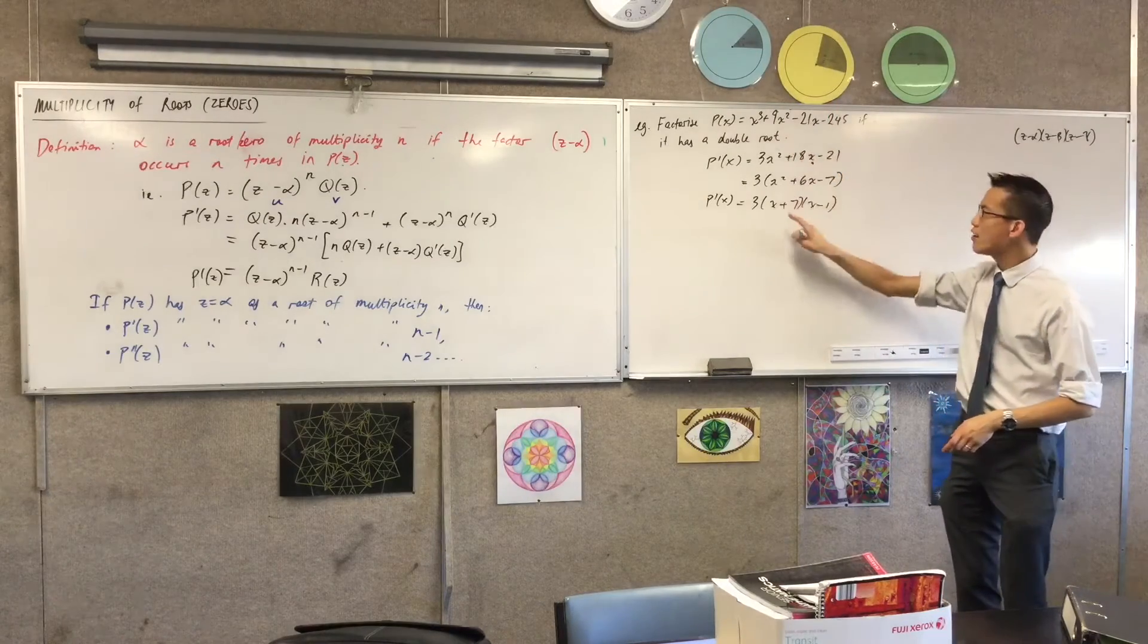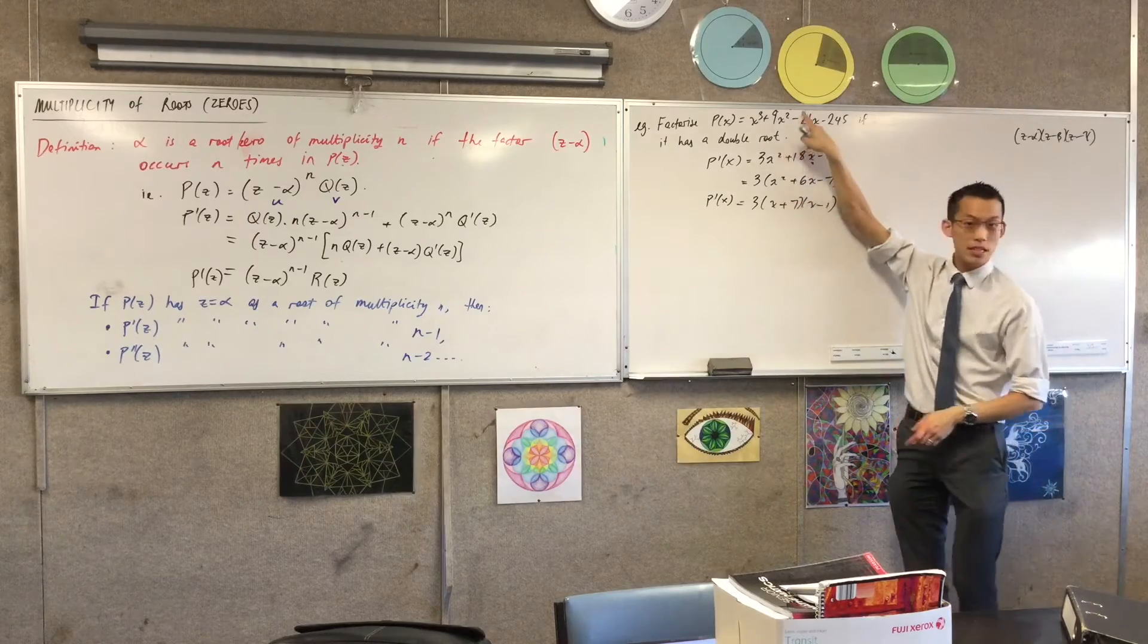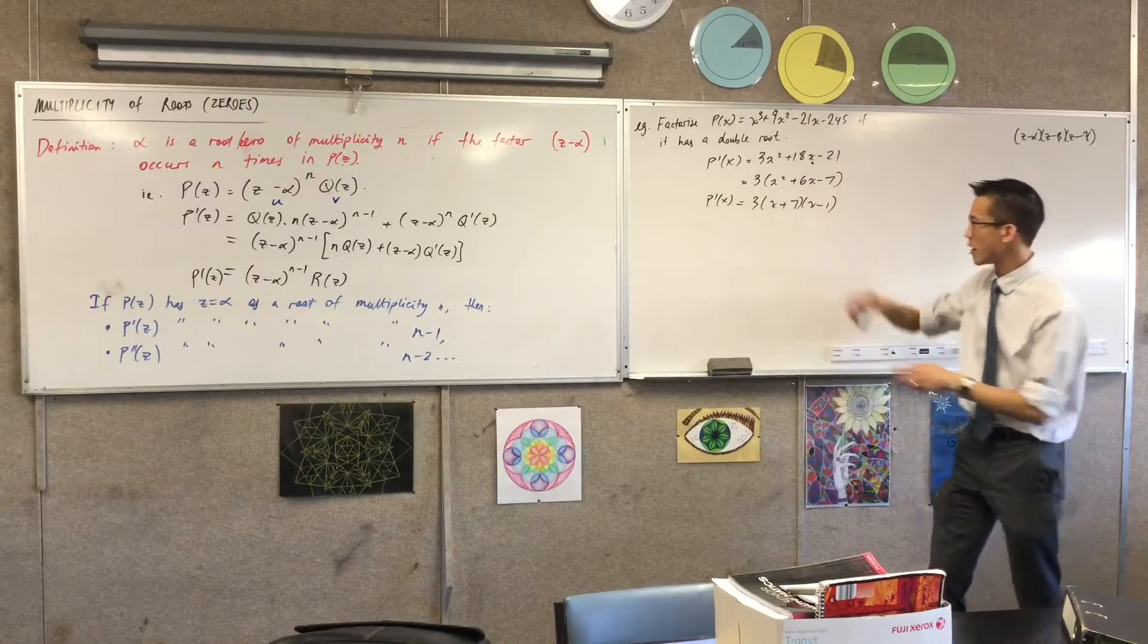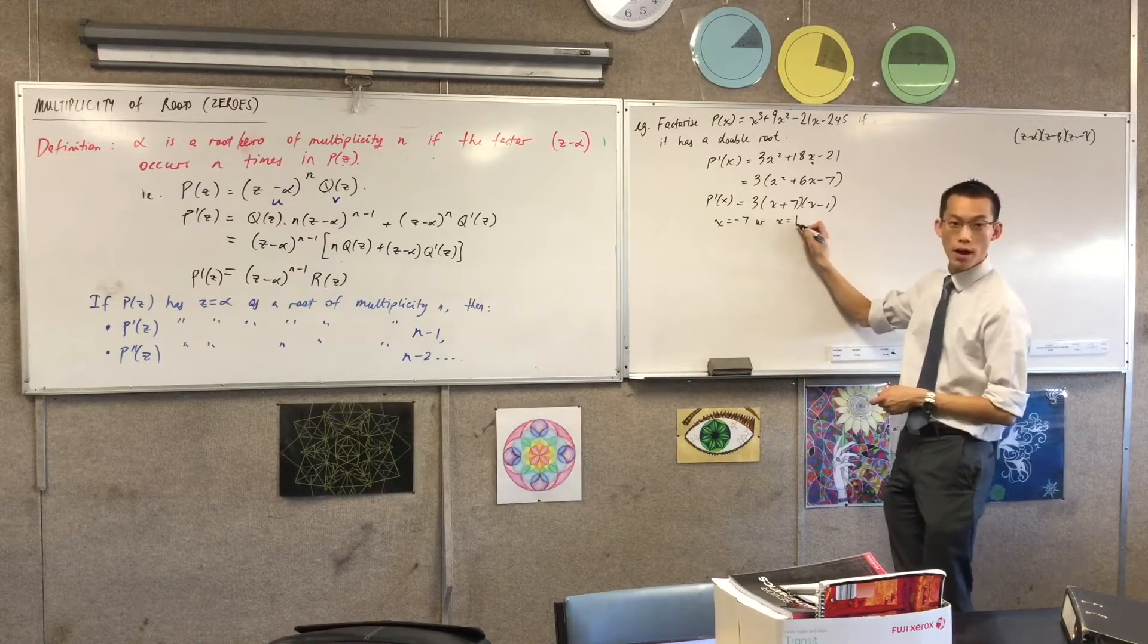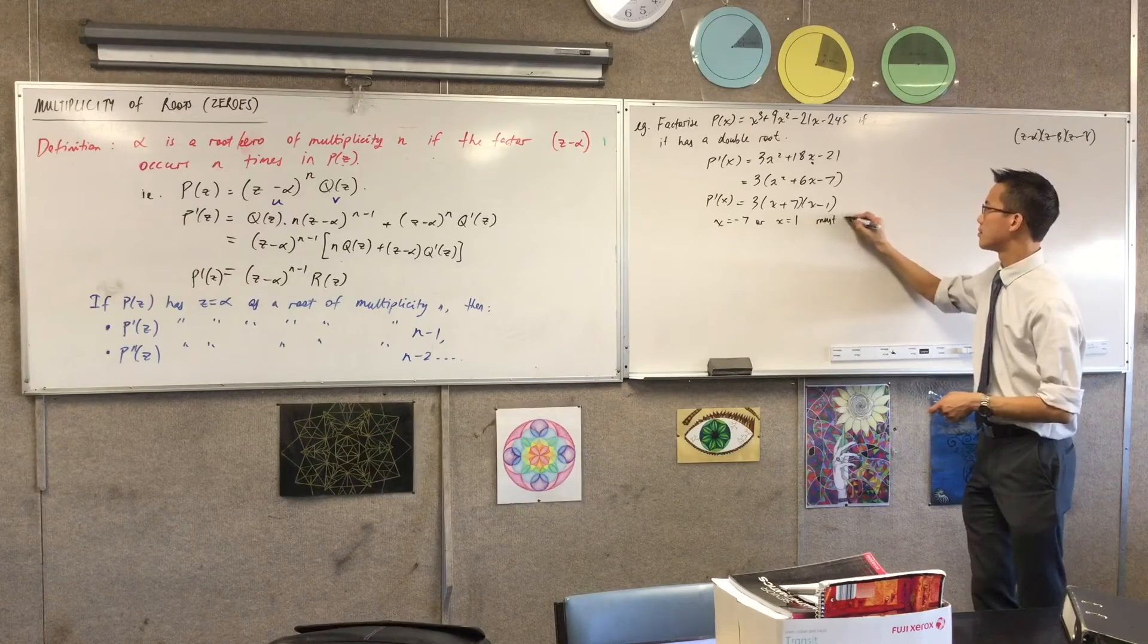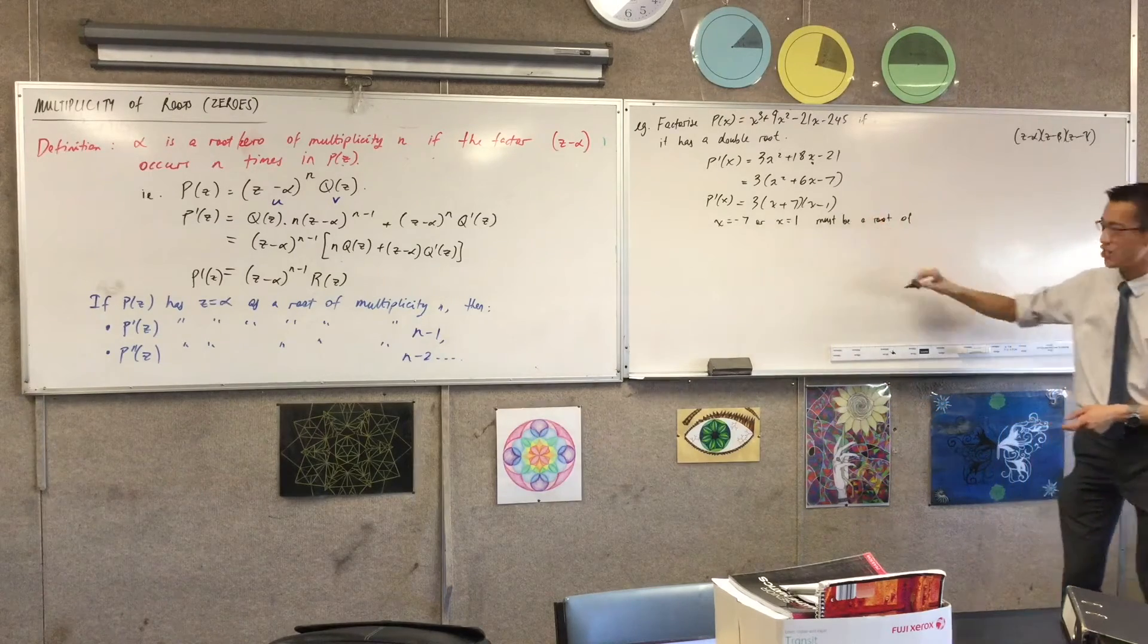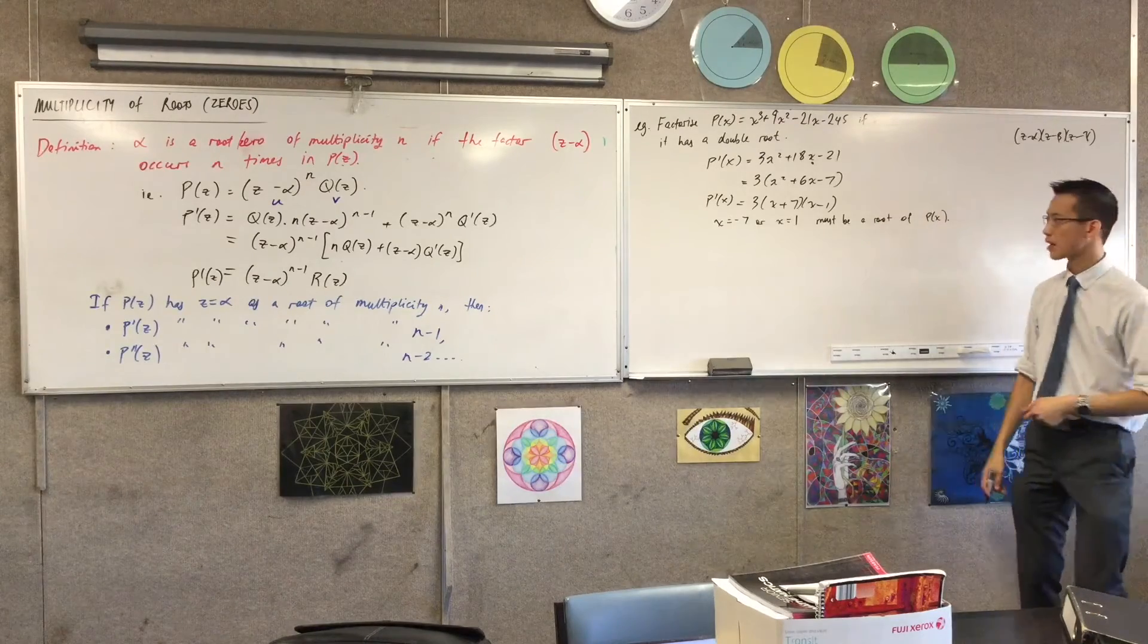But since it has a double root, I know that one of these stationary points must be one of the zeros of the original polynomial. Does that make sense? So one of these, x equals negative 7 or x equals 1, must be a root of not just P dash, but the original function.